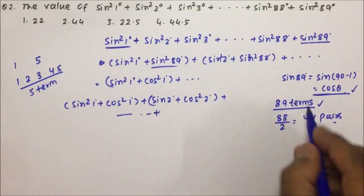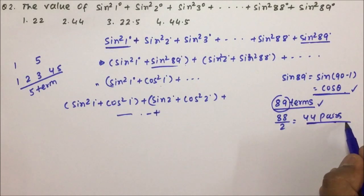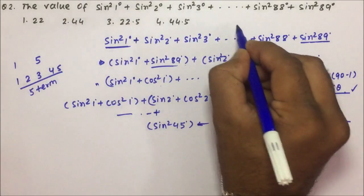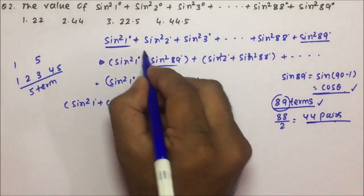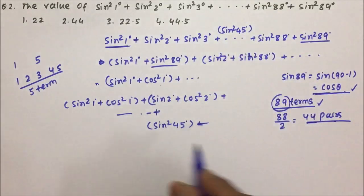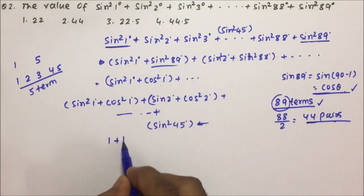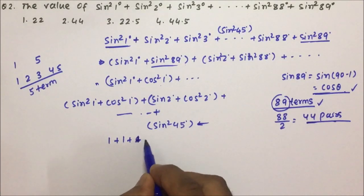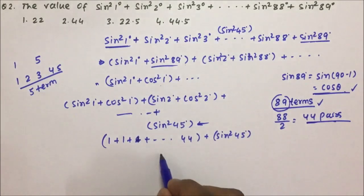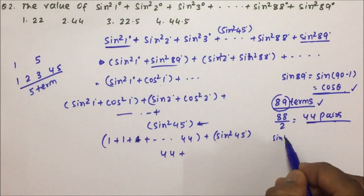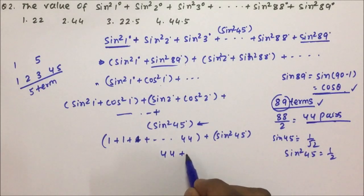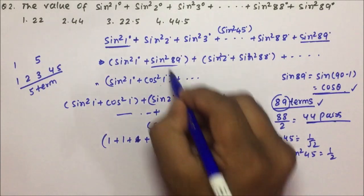We get 44 pairs, so 1 term will be remaining — that will be nothing but sin²45°, because sin²45° will not get paired with anything else. So we have 1 + 1 + 1 … up to 44, plus sin²45°. This will be 44 plus sin 45° = 1/√2, so sin²45° = 1/2. So 44 + 0.5 = 44.5 will be the answer.